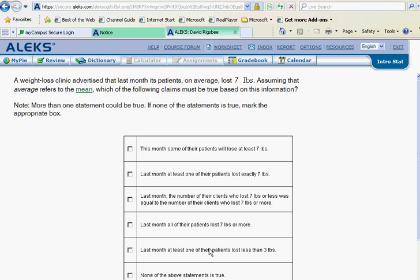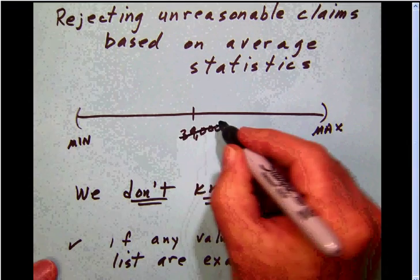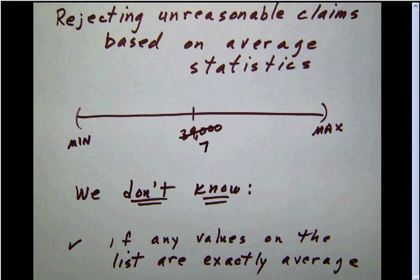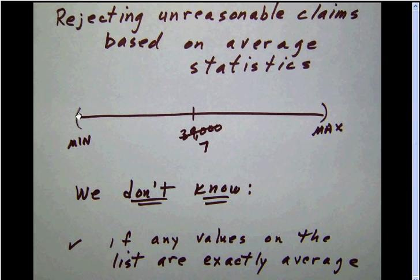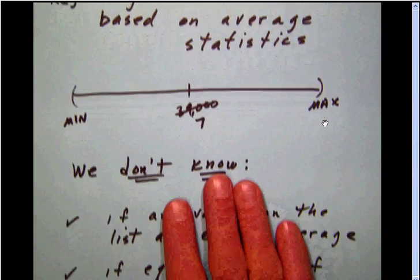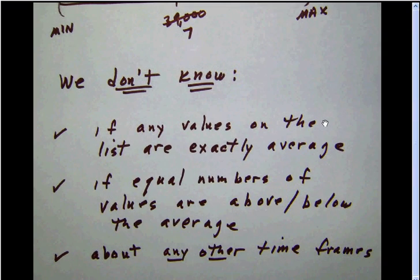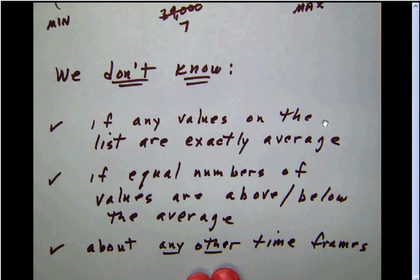In this next example, we're talking about last month, and on average these patients lost seven pounds. So now our average is seven. All we know is that something on the list is less than seven, something on the list is more than seven. We don't know if any values were exactly seven, we don't know if there's an equal number of values above and below seven, and we certainly don't know anything about any other time frames.